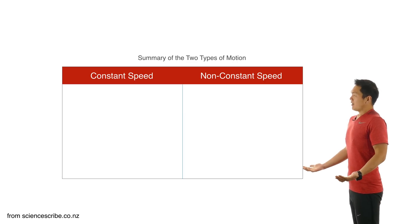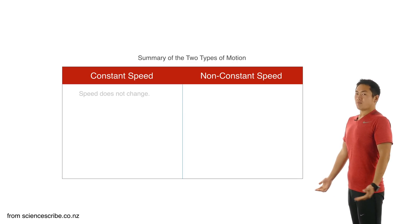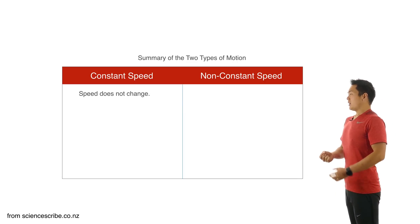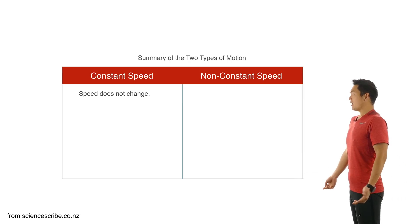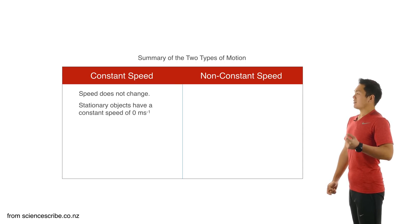For constant speed, if you pick apart the word constant, that pretty much tells you that the speed isn't changing. So this is for objects that, for example, might be moving at 100 meters per second and it stays that way. Or even objects which have a constant speed of 0 meters per second, so stationary, could be grouped in here as well.